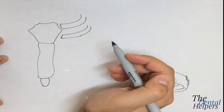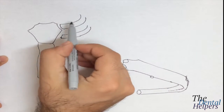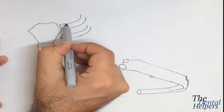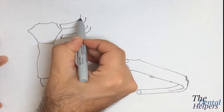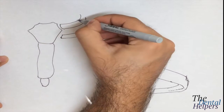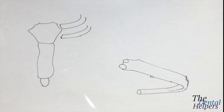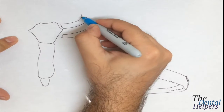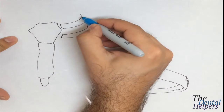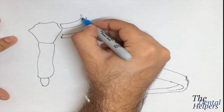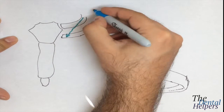The way the external fibers run: they go from superior lateral, starting up here, and making their way to inferior medial. So the external is going to go like this.